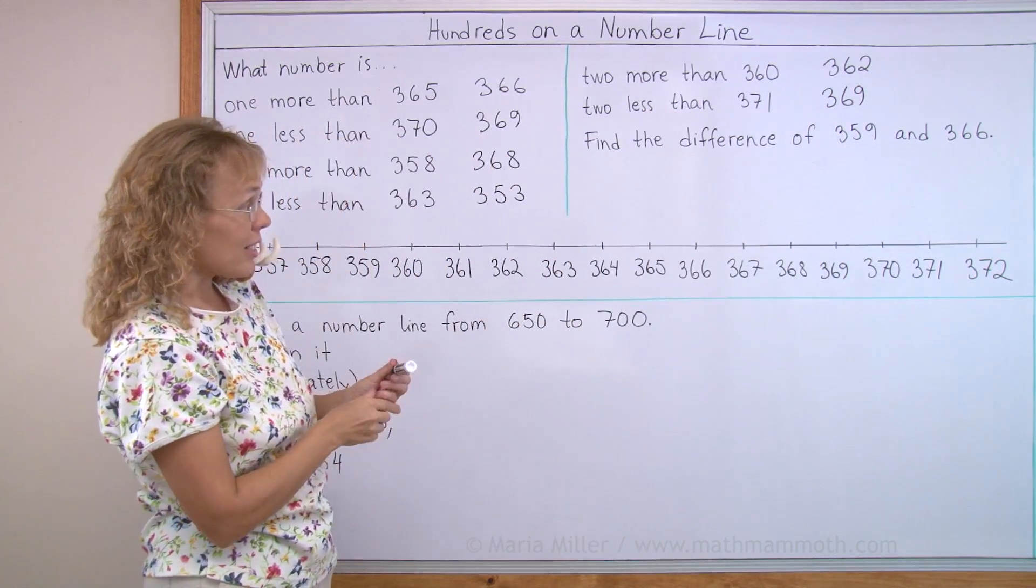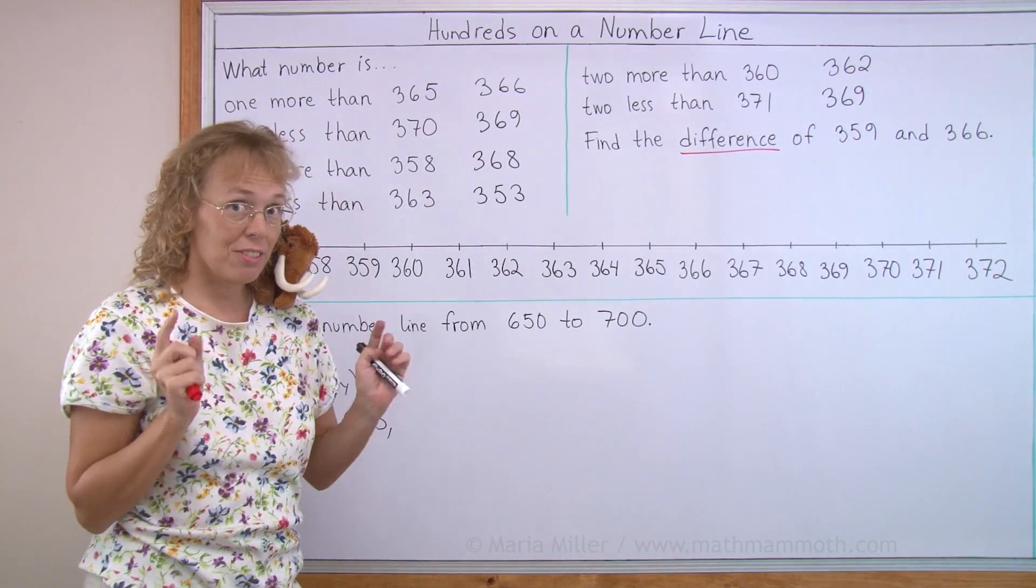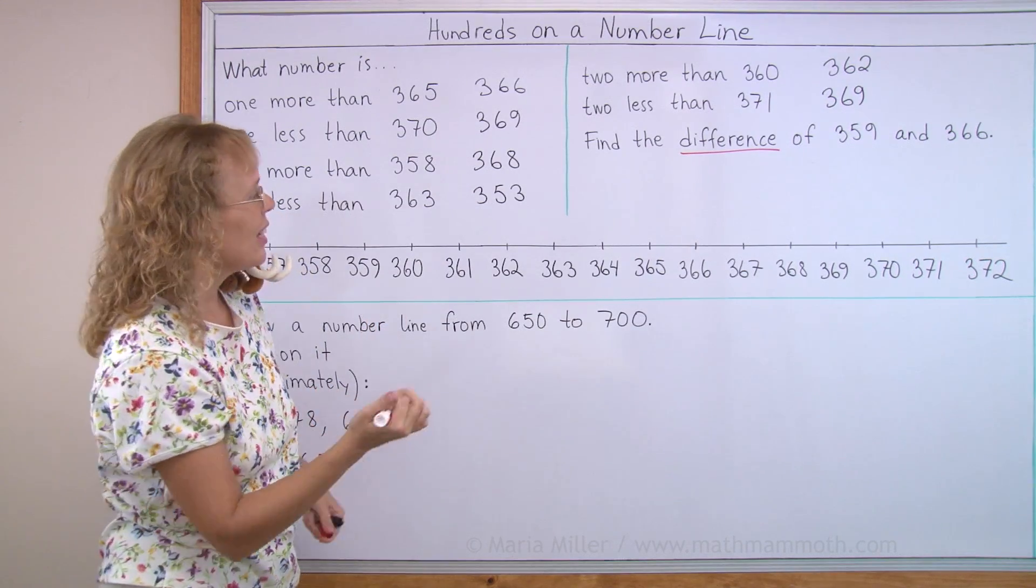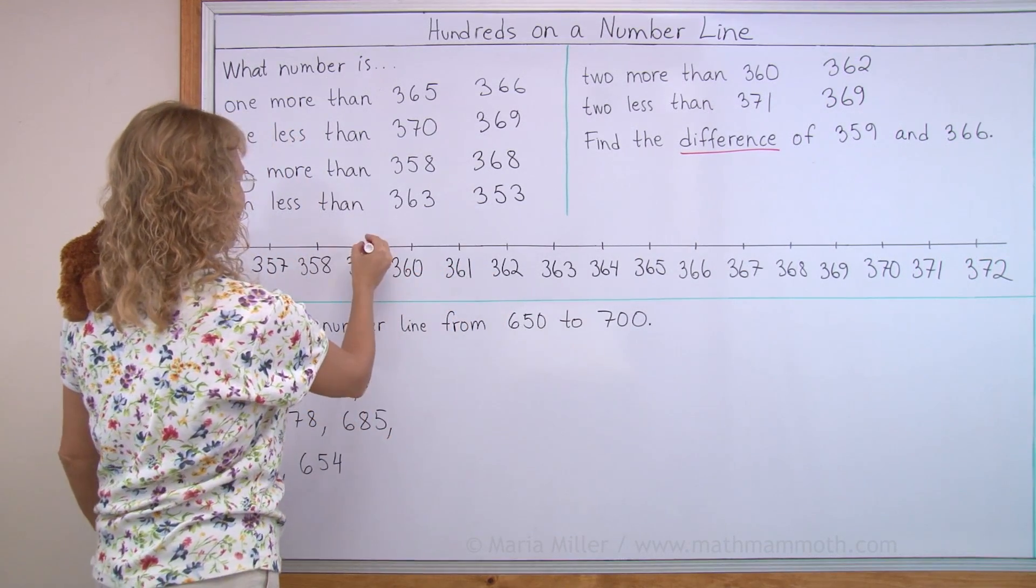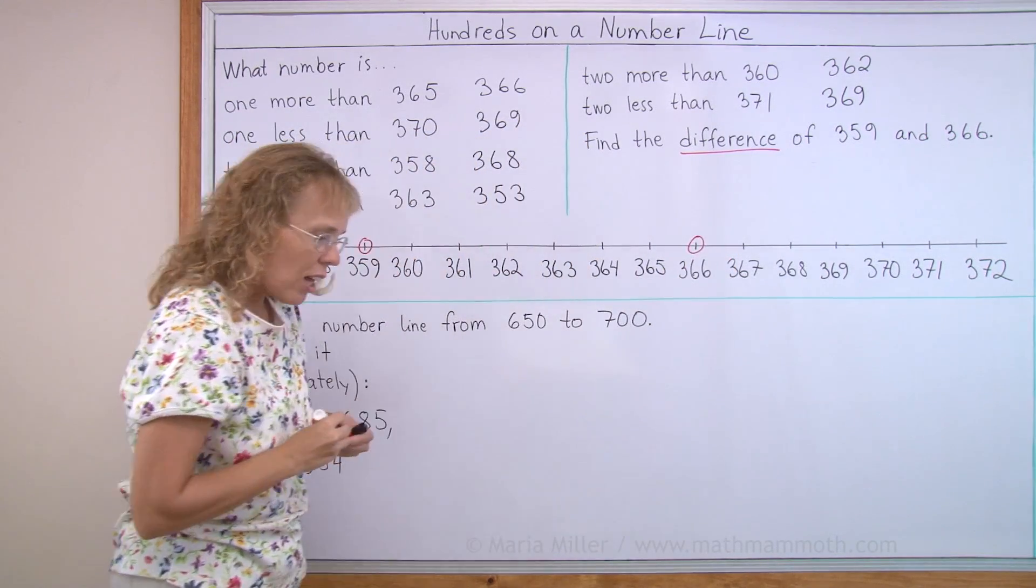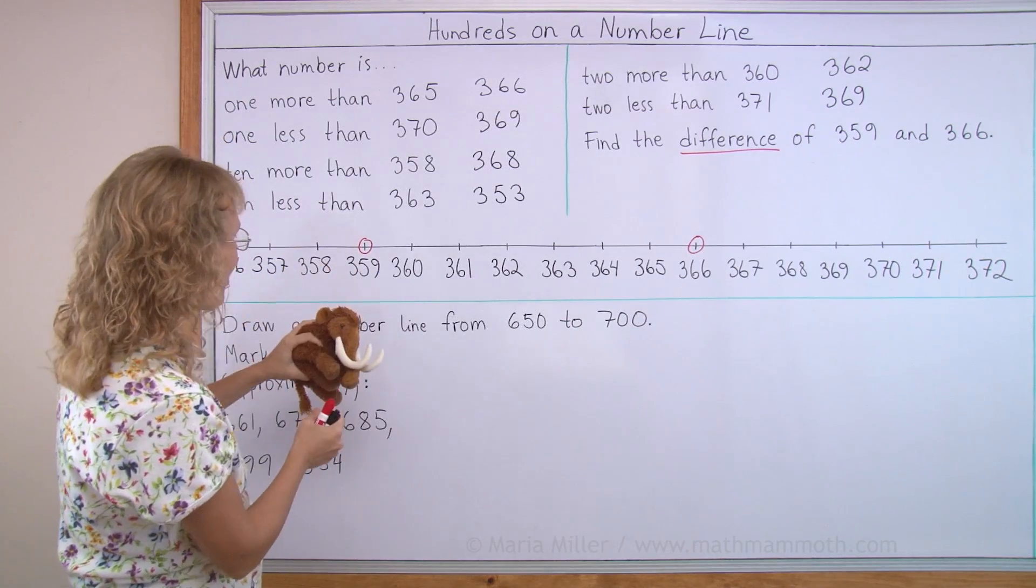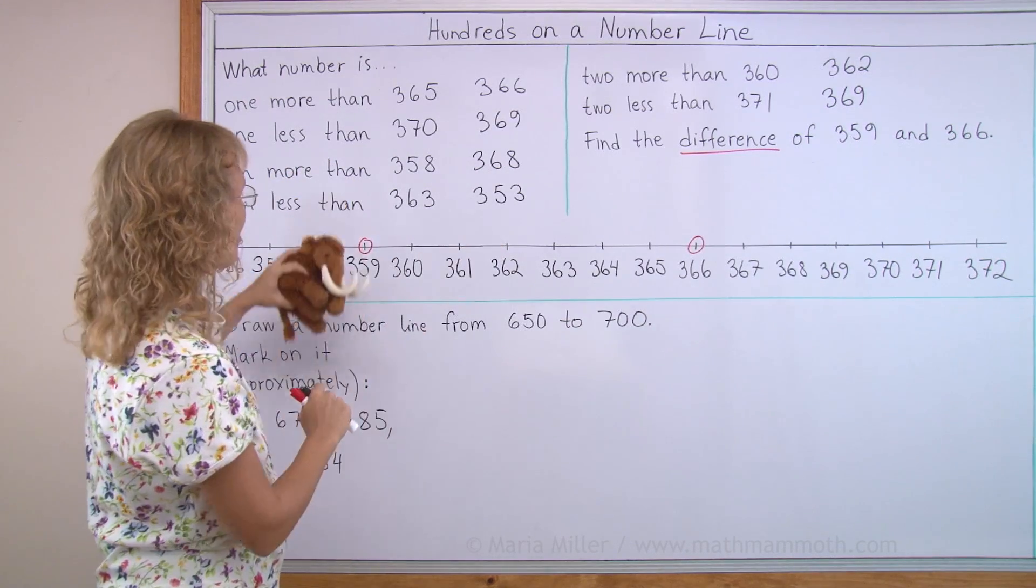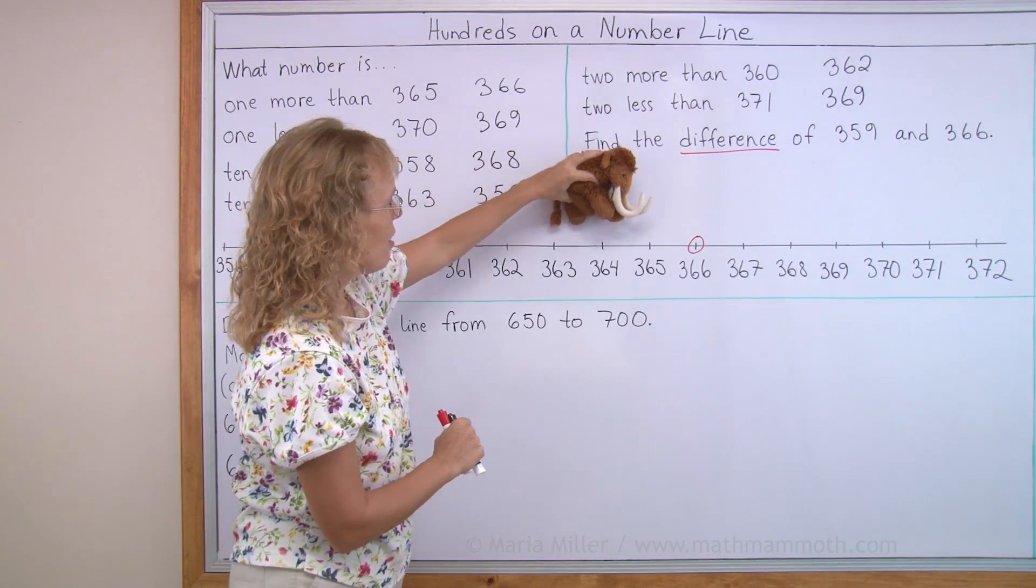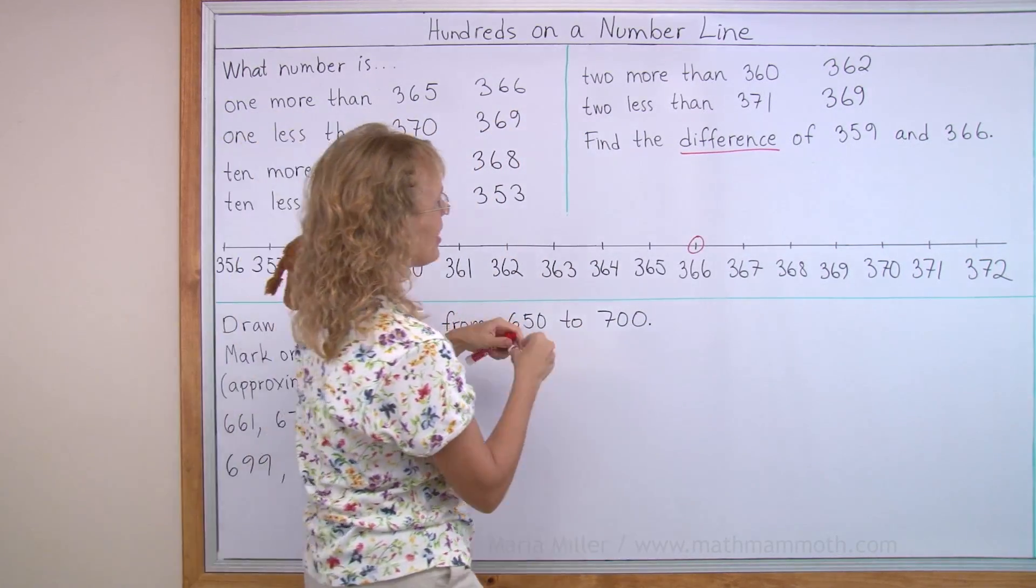And then find the difference. Difference of those two numbers. What did that mean, remember? Difference of two numbers means how far apart they are from each other. 359 is here. 366 is here. Oh. Okay. I'll let Matthew jump. He wants to go jumping on a number line and find us the difference between these two numbers. One, two, three, four, five, six, seven. Good jumping, Matthew. Seven. The difference is seven.